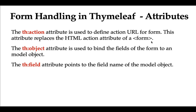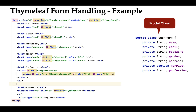Next we have the th:object attribute. This attribute is used to bind the fields of the form to the model object. For example, consider the code snippet here — within this form we have used Thymeleaf attributes such as th:object, th:action, and th:field. The th:action attribute defines the action URL for this form, and the th:object attribute is used to point to the model class object.